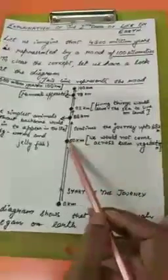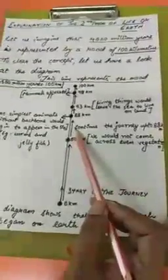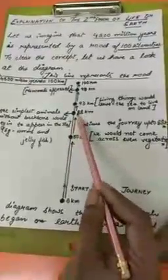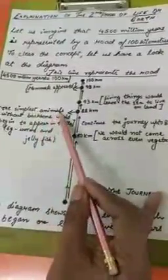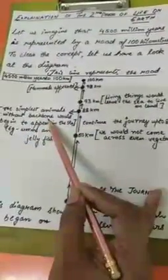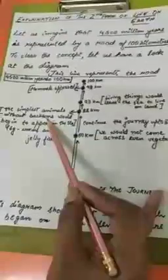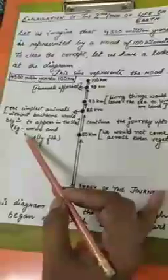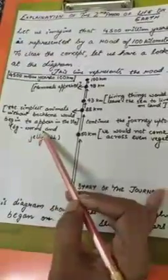Continuing the journey from 50 kilometers to 88 kilometers, we halt and see that the simplest animals without a backbone — animals who don't have a backbone — would begin to appear in the sea. For example, worms and jellyfish.